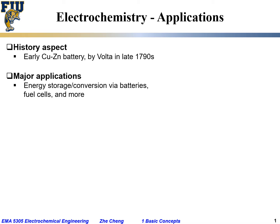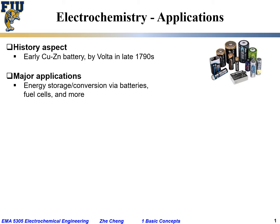In terms of major applications for electrochemistry, the first major application would be for energy storage and conversion by batteries, fuel cells, and other electrochemical devices. We saw batteries of different types, different shapes and sizes. We'll talk about more in a later part of this class.